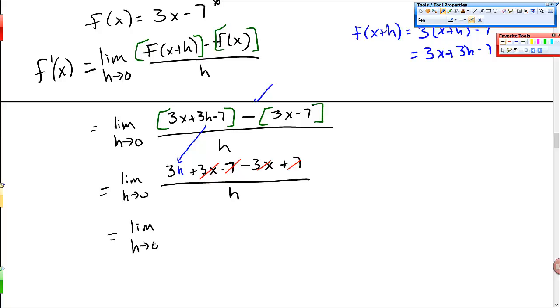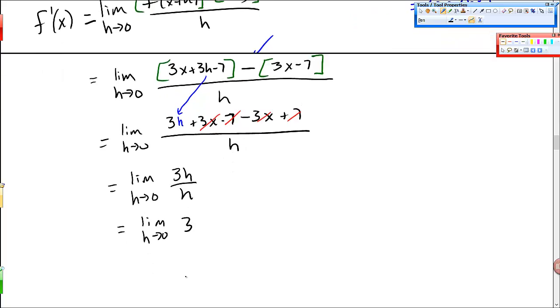Limit h goes to 0, 3h over h. The h's cancel. Limit as h goes to 0 of just the number 3. If there's no h's in there, I can let h do whatever I want, and I still get 3. So the derivative of this function is 3. And if you remember the shortcut method for derivatives, you will be able to check that too. And if you don't, we'll learn them in the next lesson.